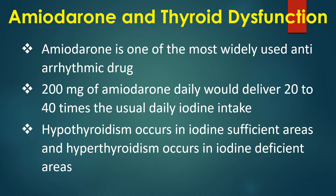Amiodarone is one of the most widely used antiarrhythmic drugs. 200 mg of amiodarone daily would deliver 20-40 times the usual daily iodine intake. Hypothyroidism occurs in iodine-sufficient areas, and hyperthyroidism occurs in iodine-deficient areas.